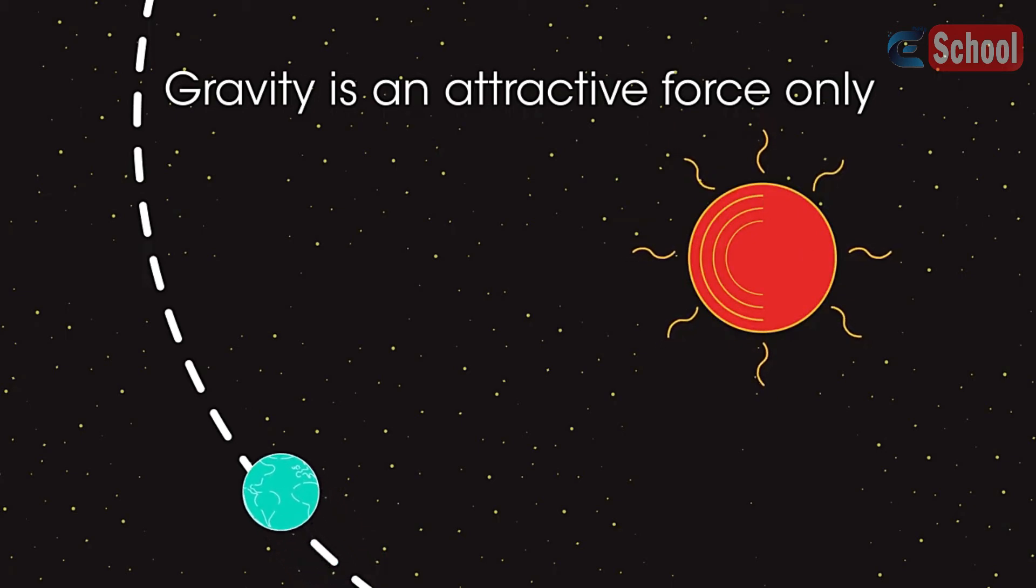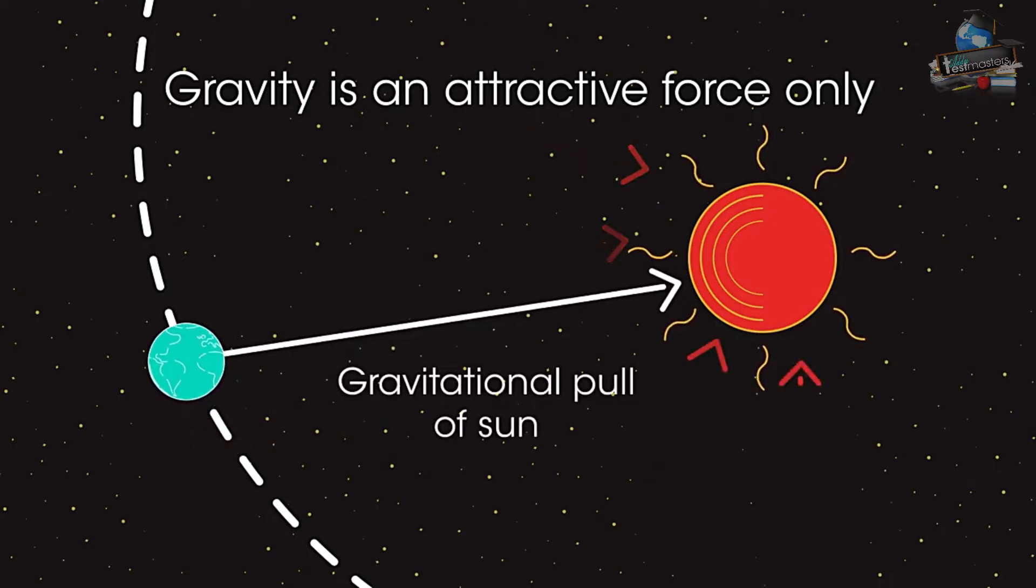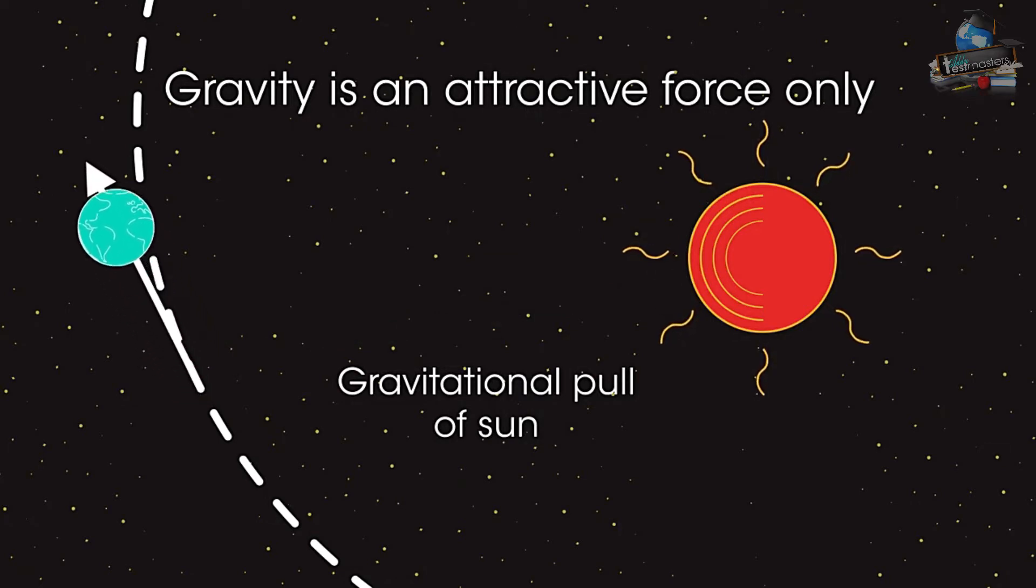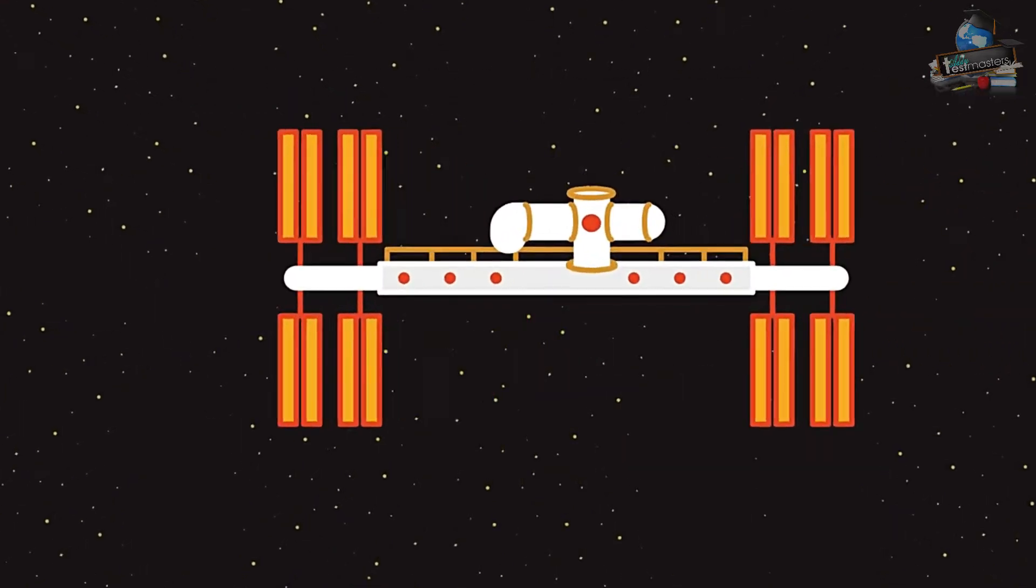Gravity is an attractive force only and acts weaker over long distances. It's the gravitational force between the Earth and the Sun which keeps the Earth in orbit. Without this force, the Earth would continue to travel in a straight line.